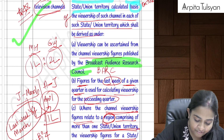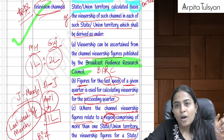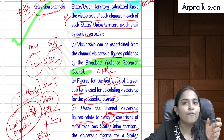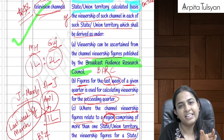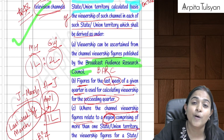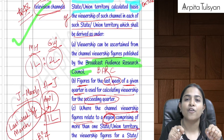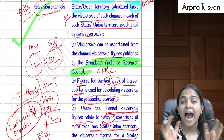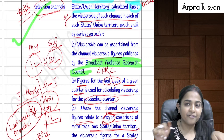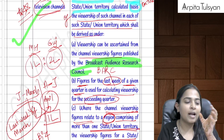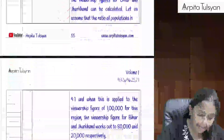If BARC provides combined regional figures covering more than one state, that figure is further split in the ratio of population as per the latest census. For internet advertisements, the split is based on the number of internet subscribers in each state as reported by TRAI (Telecom Regulatory Authority of India), using data from the last quarter. If TRAI gives combined regional figures, the census population ratio is again used.